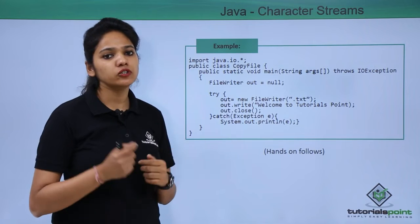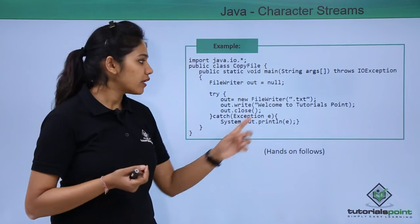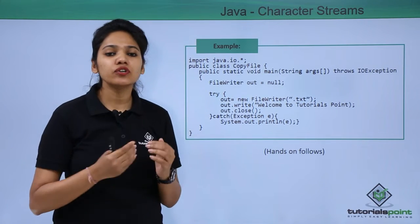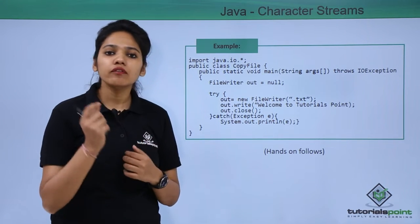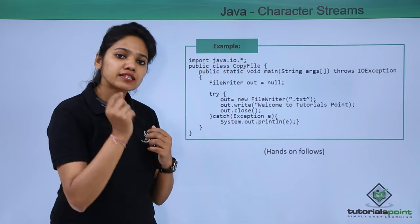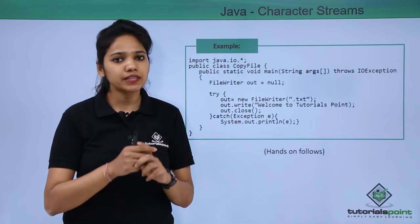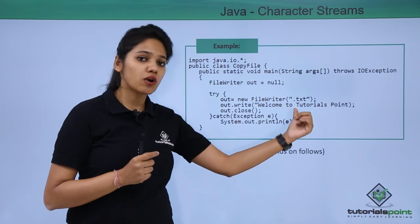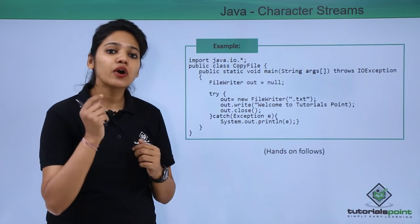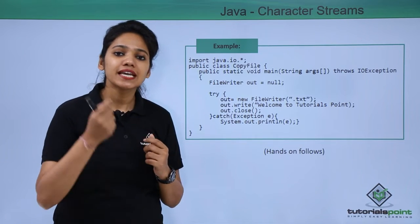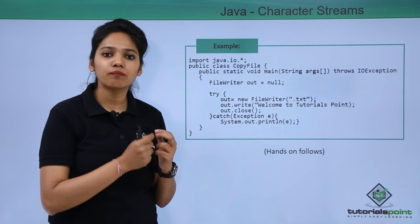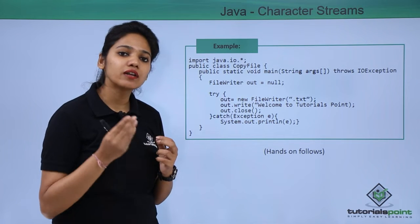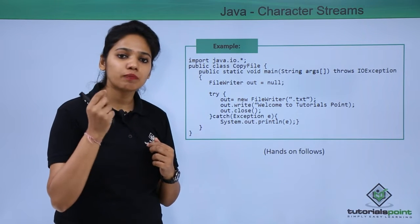In the FileWriter constructor, you provide your text file name. Once you provide the file name, you write data to it. If you recall from previous videos, we used FileOutputStream to write a single byte by calling the write method. But if you had to write a message like 'Welcome to Tutorials Point', you had to create an array of bytes, get each byte, store it, and then save it in the destination file.